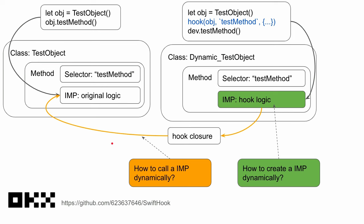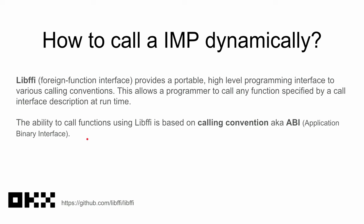The key point is how to call an IMP dynamically and how to create an IMP dynamically. For this, I use the library named libffi — foreign function interface. When you call a standard C function, you need to follow some rules about where to put the parameters and where to get the result. Different architectures have different rules. These rules are called the calling convention, also called application binary interface (ABI). libffi helps us manage these things — we just tell it which function to call, the types of the parameters, and the return type.